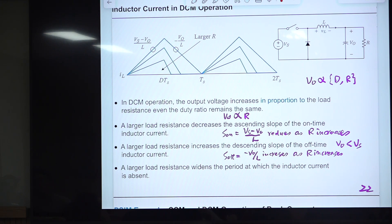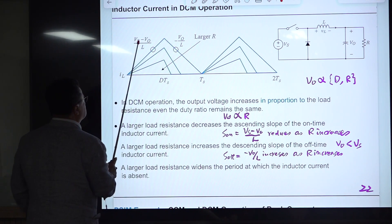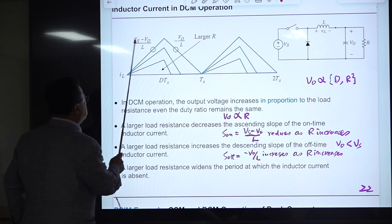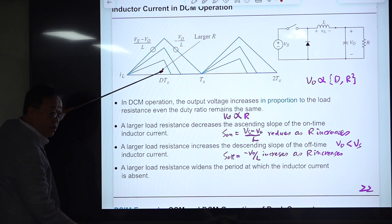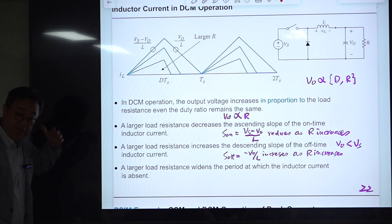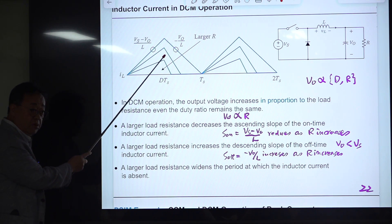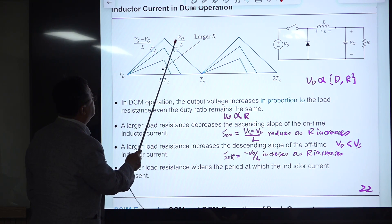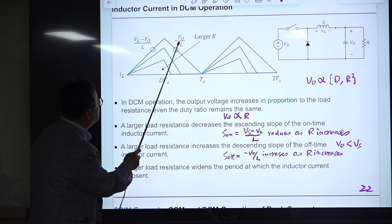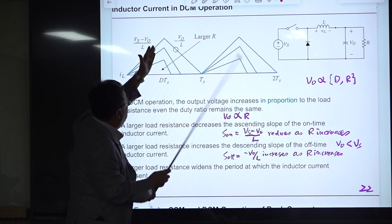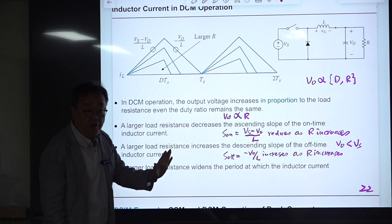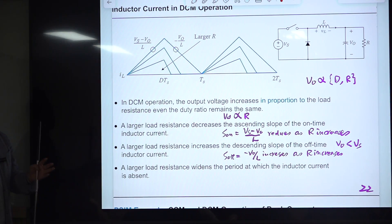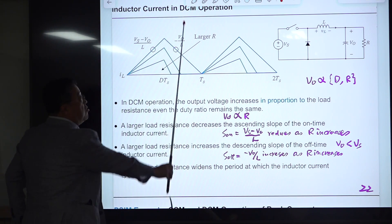Larger R increases output voltage. The slope during the on-time period is fixed and the off-time slope is minus V_O divided by L. If V_O is increased, the slope increases and it decays faster, reaching zero before the next switching period starts. Then the diode turns off and remains off for the remaining time of the switching period.